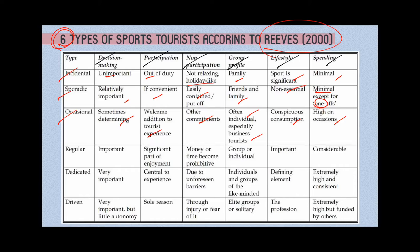The next type is the regular sports tourist. The decision to go for a sporting activity is important and is a significant part of their enjoyment when they go on a tour. One of their primary itinerary items is to go for a sporting activity or spectation. Non-participation could be due to money or lack of time. The group profile may be an individual or a group. Sport and health are important to them, and they do a considerable amount of spending for engaging in a specific sport at a specific tourist destination.